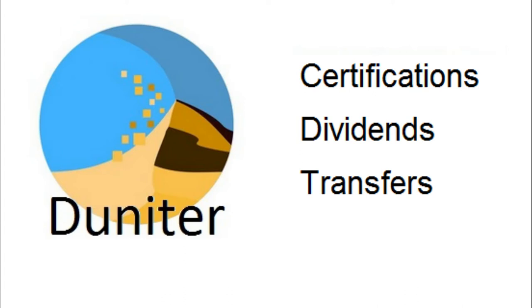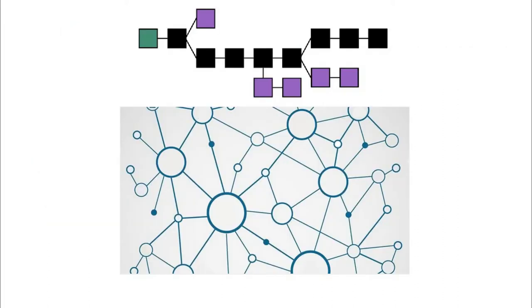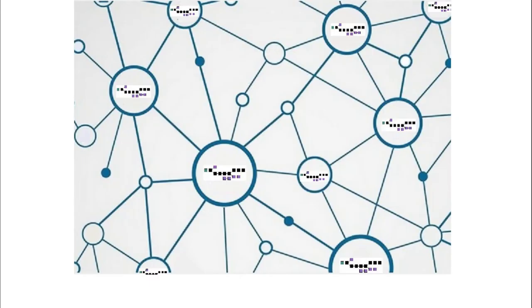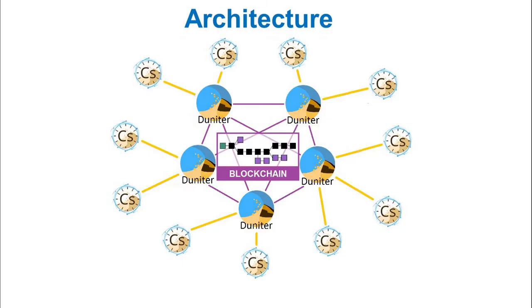Cesium and Junita are libre software. The data itself is stored in a blockchain — a distributed and secure registry. In this decentralized system each server has a copy of all the data; these servers are operated by anyone who wishes to do so, and their number makes it difficult to falsify the data.